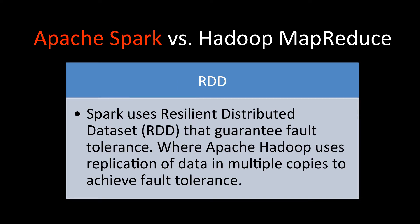In Spark, the concept of RDD — Resilient Distributed Dataset — guarantees fault tolerance. Even if a machine goes down, it remains fault tolerant. Whereas in Apache Hadoop, fault tolerance is achieved by replication of data in multiple copies. If a machine goes down, we use the other replica.